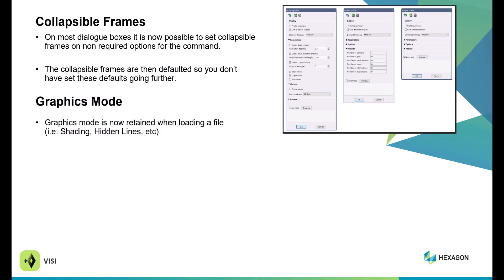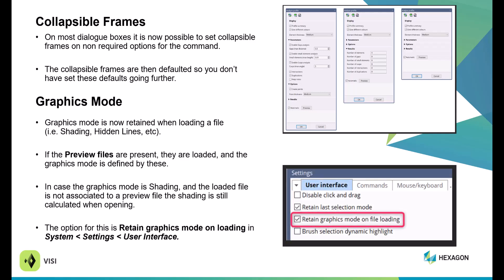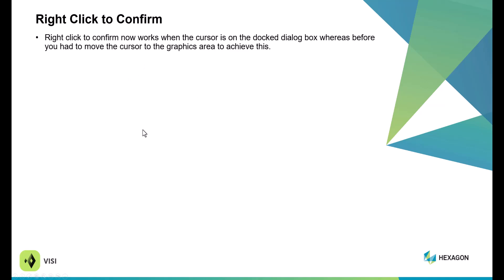Within graphic mode, you can now retain your shading and lines inside your file. When you save and close, you can reload it, and it is not necessary to have these defined inside a preview file. There's a new option within System Settings called Retain Graphic Modes on File Load. You now also have the ability to right-click and confirm within the dialog box you're applying a command to — you don't have to have your cursor in the graphic area anymore.